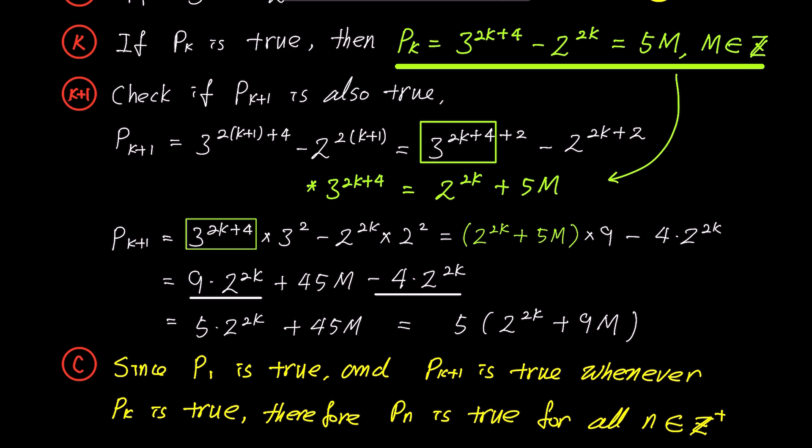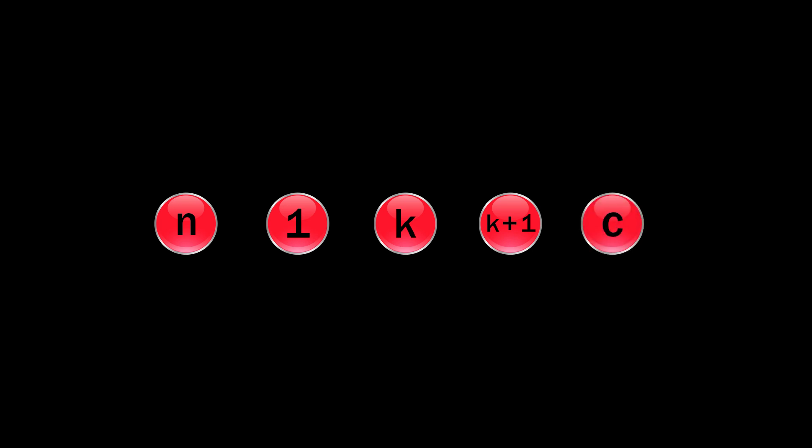To recap, we used these 5 steps to prove the statement using mathematical induction. Step 1 gave a name to the problem. Step 2 checked the first term. Step 3 assumed pk to be true. Step 4 verified pk plus 1 using the assumption from step 3 and step 5 provided the conclusion. Remember these initials and you will find it easier to solve problems systematically.